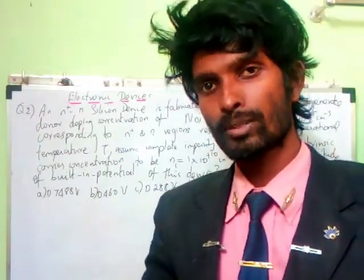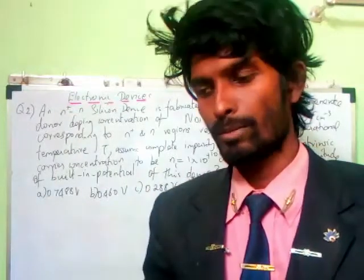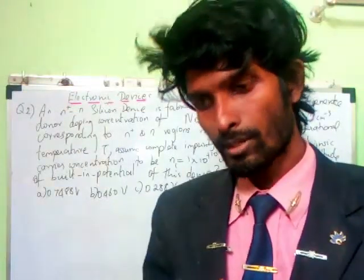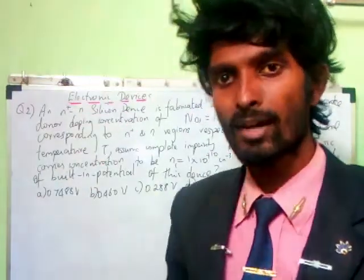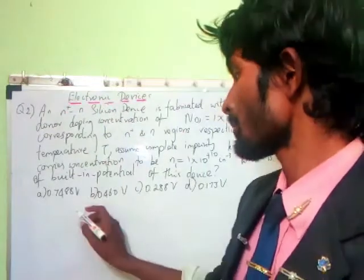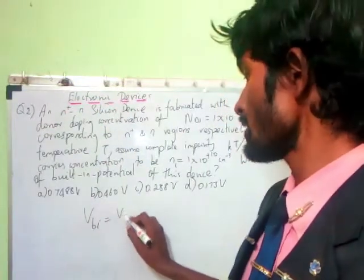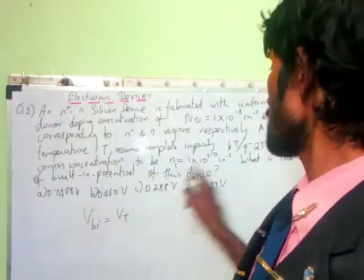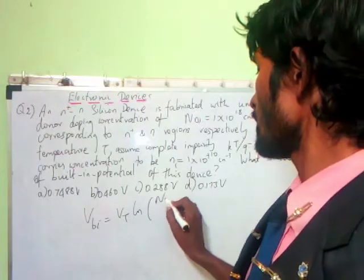Now they have asked about what would be the built-in potential after adding impurity. So let's look at the built-in potential. Here we have a simple formula. V_bi is equal to V_T times ln of n_d1 divided by n_d2.